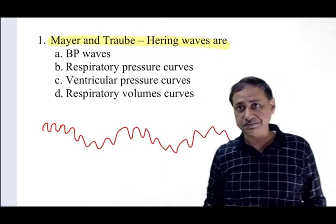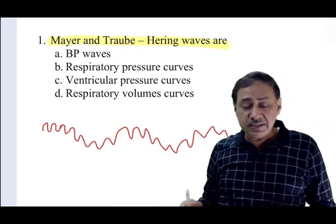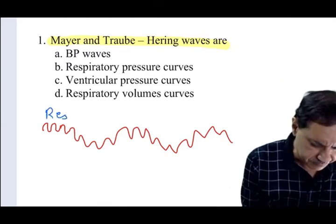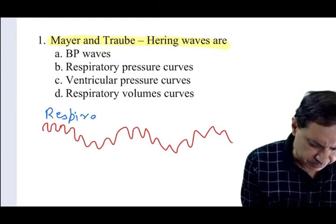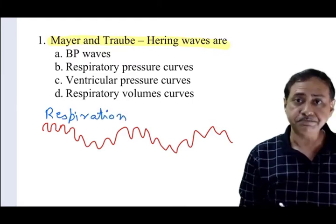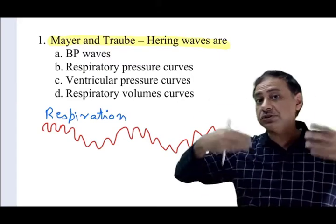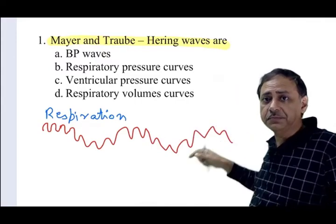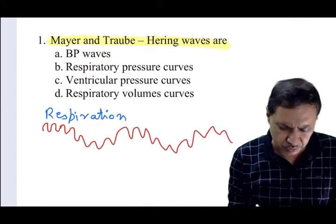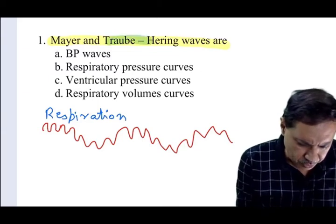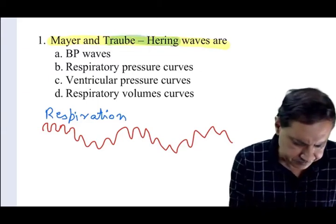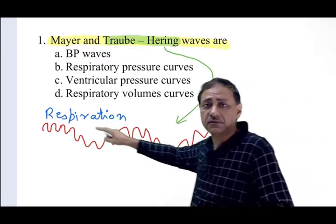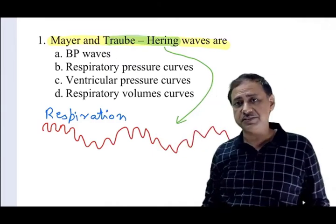Why is this BP fluctuating? This BP is fluctuating because of respiration — inspiration and expiration. Because of these respiratory movements, BP fluctuates. This fluctuation in BP because of respiration is known as Traub-Hering wave.